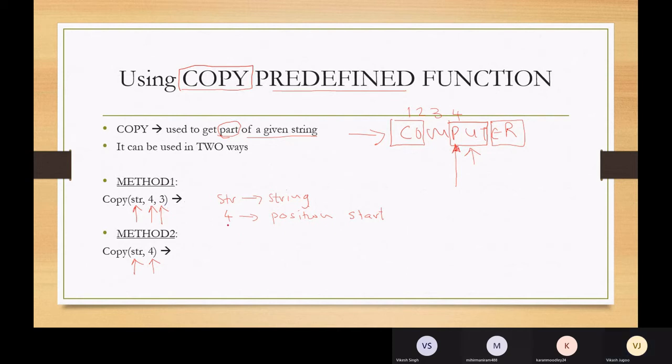And the three is not the end position. The three is the number of characters that I want to take from the start position. So if this is my start position, I want to take three characters from there. One, two, three. So that is what it's actually going to take.